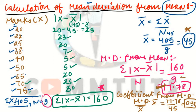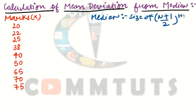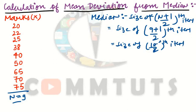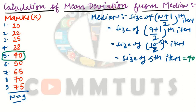Now we calculate mean deviation from median. First, how do we calculate the median? The formula is: size of (n + 1) / 2 item. Here n = 9, so size of (9 + 1) / 2 = size of 5th item. Counting the data: 1, 2, 3, 4, 5, 6, 7, 8, 9 — the 5th item is 40. So the median is 40.